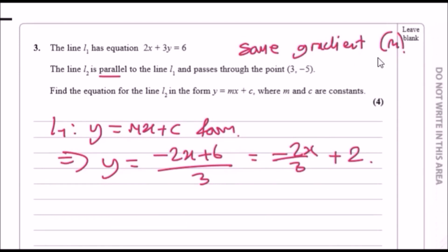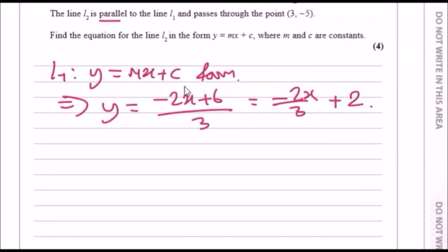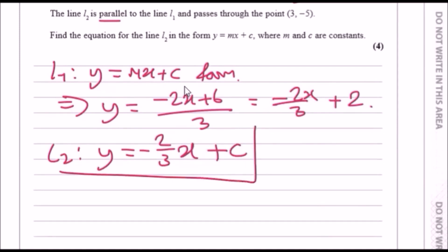Since L1 and L2 are parallel, the gradient of L2 is also negative two thirds. So we can immediately write L2 as y equals minus 2 over 3 times x plus c. Now we just substitute the known point on the line to find c.